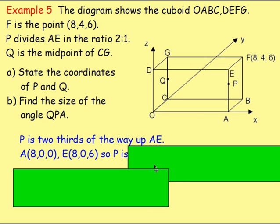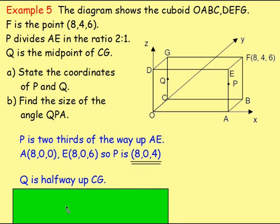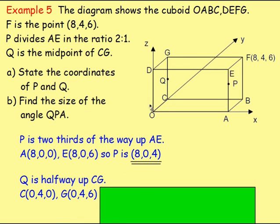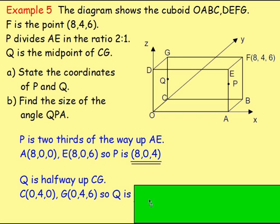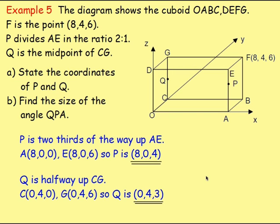Point P is two thirds of the way up AE. You're still at x=8, y=0, but going up two thirds of 6, which is 4. So P is (8,0,4). For Q, the coordinates of C are (0,4,0) and G is (0,4,6). Since Q is the midpoint of CG, you go along 0, back 4, and half the height which is 3. So Q is (0,4,3).